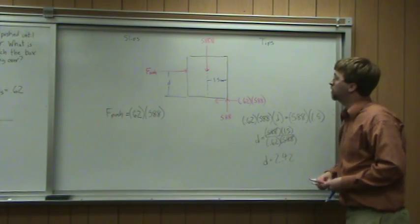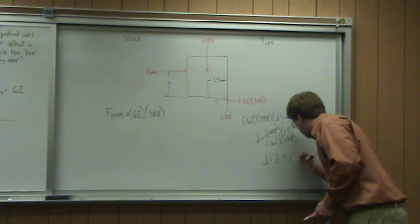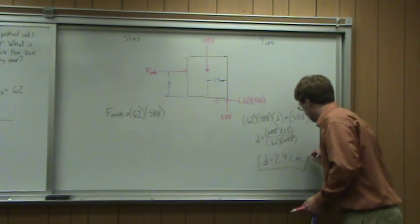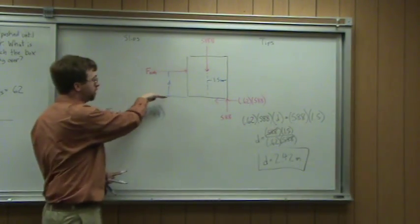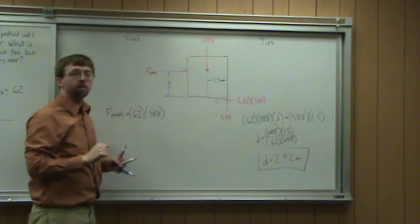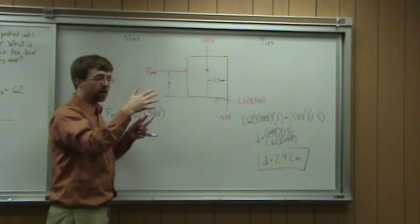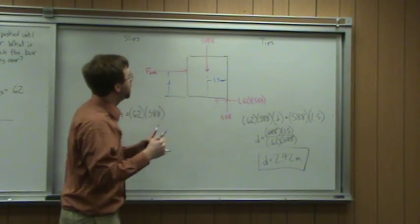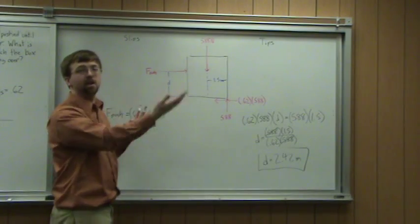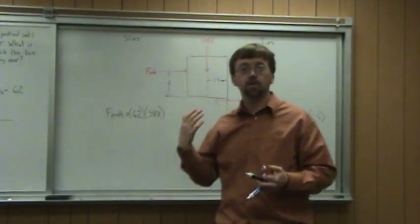And since all of my units were in meters and newtons, my final distance will be in meters. So if my pushing force is 2.42 meters up from the ground, I'm equally likely to tip or slip. If I go lower than that value, I push lower down on the box, it's going to slip. If I push higher up on the box, it's going to tip before it starts to slide. So with that, I've solved my problem.